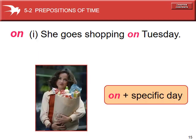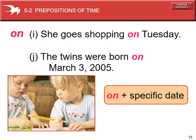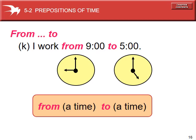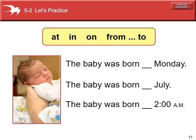With "on", it's used for a specific day or a specific date — just one day. So: on Tuesday, just that day. Or on March 3rd, 2005, just that one day. "On" is used with a specific date. The last preposition we're going to talk about is "from...to": I work from 9 to 5 p.m. "From" is followed by a clock time, and "to" is also followed by another clock time.